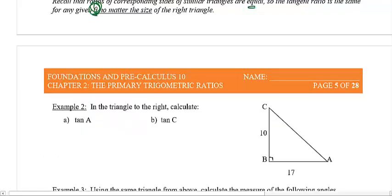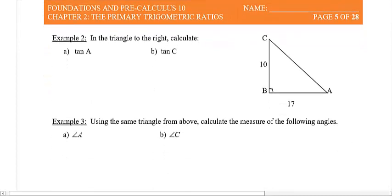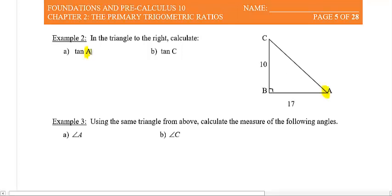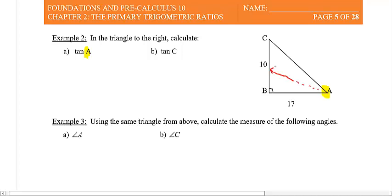Here's example two. I want you to figure out the tangent ratio for angle A and also tangent of angle C. With A as the target angle, the opposite side is 10 and the adjacent is 17, so tangent A equals 10 over 17. If I ask you to find tangent of C though, it's a different story — now C is the target angle. The side across from C is 17, and the adjacent side is 10. So tangent C equals 17 over 10. You see how the ratio really depends on the angle you're talking about.